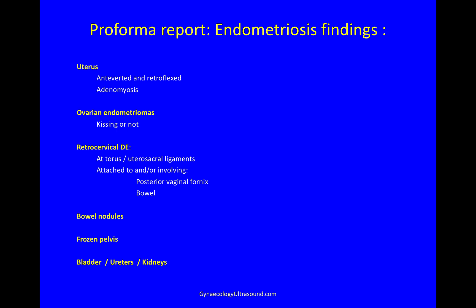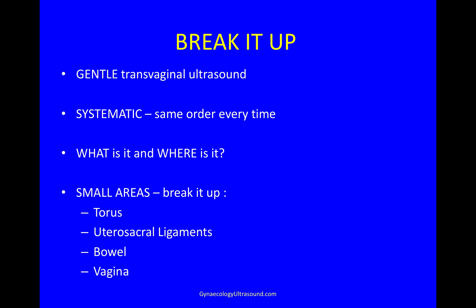Whether there are any other bowel nodules, frozen pelvis, and looking at the bladder, the lower ureters and the kidneys. My suggestion is that you break it up. When the scan is complicated, break it up into small pieces, into small steps. Always remember to be very gentle with the transvaginal ultrasound. Be systematic, more or less the same order every time, then you can't forget any one element. And when you find something, think: what is it and where is it? In small areas, break it up into torus, uterosacral ligaments, bowel and vagina.